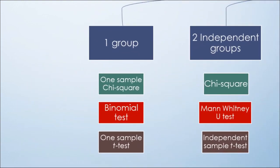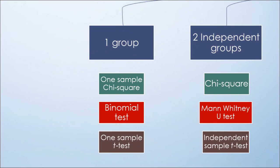With one group, we can do one sample chi-square test for categorical data, binomial test for non-parametric, and one sample t-test for parametric data.